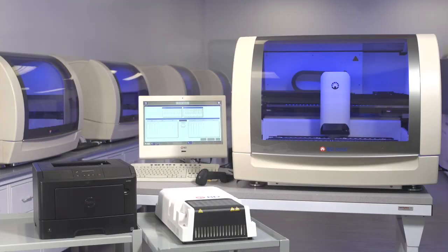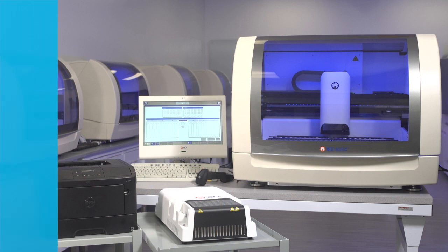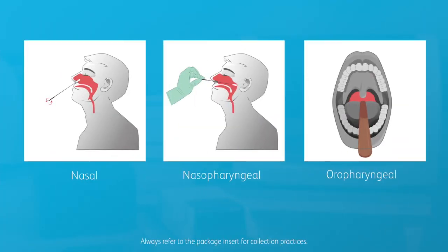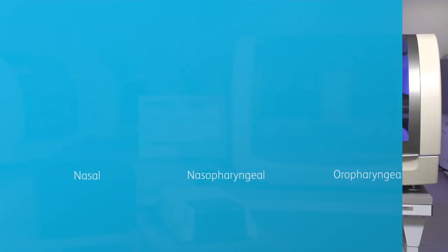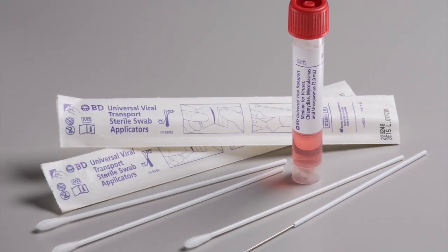To process specimens, the BD-SARS-CoV-2 reagents for BD-MAX system requires total nucleic acid or TNA to be isolated and purified using BD-SARS-CoV-2 reagents for BD-MAX system from nasal, nasopharyngeal, or oropharyngeal swabs collected in BD-Universal Viral Transport System or Copan Universal Transport Media System and nasal swabs collected in 0.85% saline. The patient sample is transferred to the sample buffer tube provided in the reagent package and then placed in the BD-MAX system.